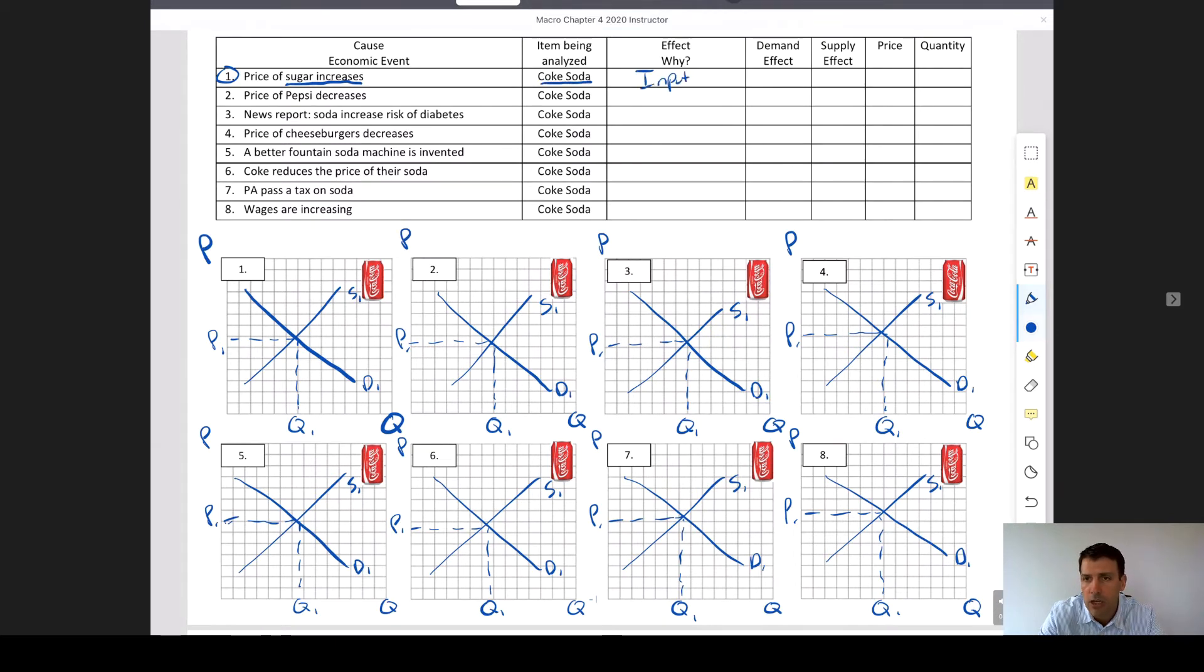The first thing we want to do is label that input cost or input price. No change in the demand curve, so demand is not changing here. Supply is going to shift to the left, so let's go ahead and label that accordingly. Let's shift to the left. That's going to push the price up and the equilibrium will move to the left there and push quantity down.